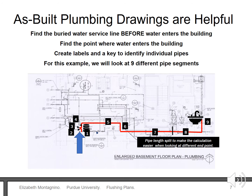To create a flushing plan, find the as-built construction drawings for the plumbing system. If using an as-built drawing you can begin to trace the water's flow as it enters the building to different faucets. Here you can see there are nine pipe segments between where the water enters the building to one faucet on the far right side of the building.